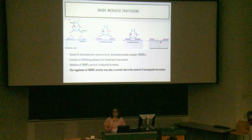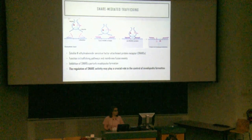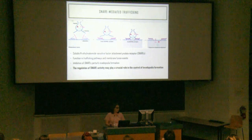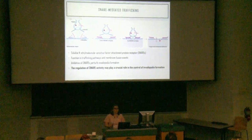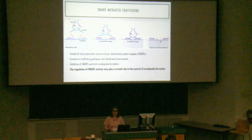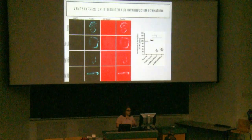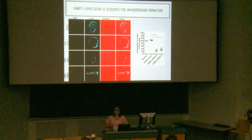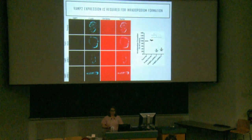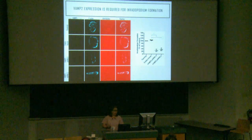Previously, we've looked at SNAREs like Syntaxin-4, SNAP-23, and VAMP-7, and perturbing these all decreased invadipodia formation. However, the regulation of SNAREs may play a crucial role in this process but is not well-studied. Another SNARE that interacts with Syntaxin-4 and SNAP-23 is VAMP-2, which also hasn't been well-studied in our model.